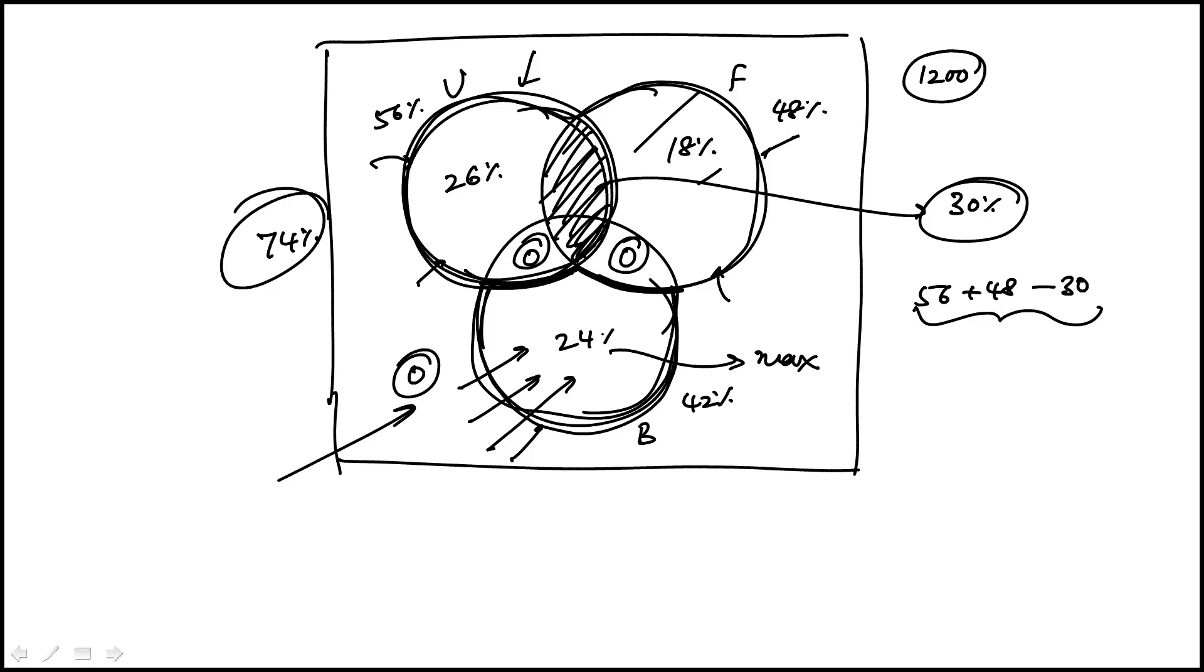So the maximum I can have here remaining out of 100 would be, sorry, not 24, 26%, my calculation mistake. So this would be 100 minus 74. So 26% is the maximum that I can put in the people who cited bargain prices, but neither user-friendly nor fast response time.